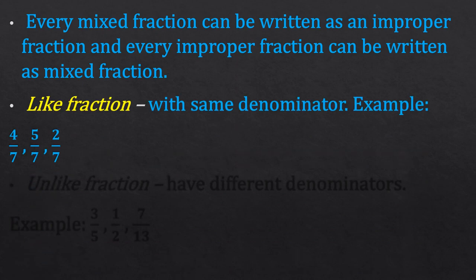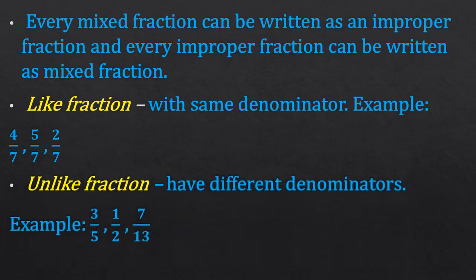The next type is like fractions. Like fractions are those fractions whose denominators are the same. For example, 4 upon 7, 5 upon 7, 2 upon 7 — all have the same denominator 7, so these are like fractions. The next type is unlike fractions — those whose denominators are different. For example, 3 upon 5, 1 upon 2, 7 upon 13 are all unlike fractions.